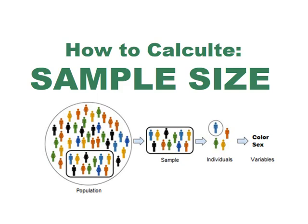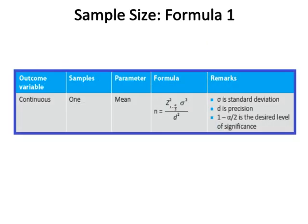Sample size formula one: the outcome variable is continuous, the sample is one, and the parameter is mean. The formula is n = (Z_(1-α/2))² × σ² / d², where σ is the standard deviation, d is precision, and (1 - α/2) is the desired level of significance.